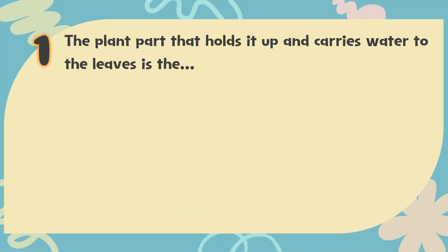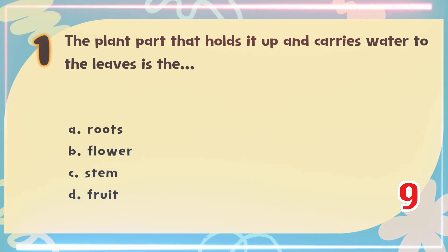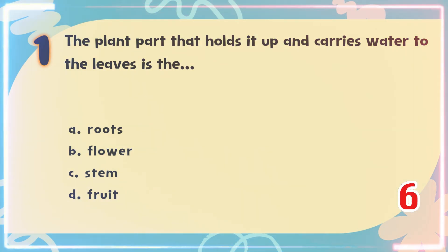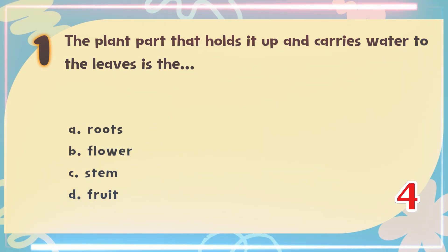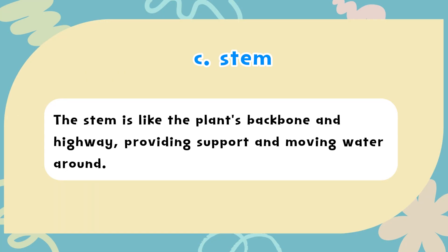Number 1: The plant part that holds it up and carries water to the leaves is the — A. Roots, B. Flower, C. Stem, D. Fruit. The correct answer is C. Stem. The stem is like the plant's backbone and highway, providing support and moving water around.